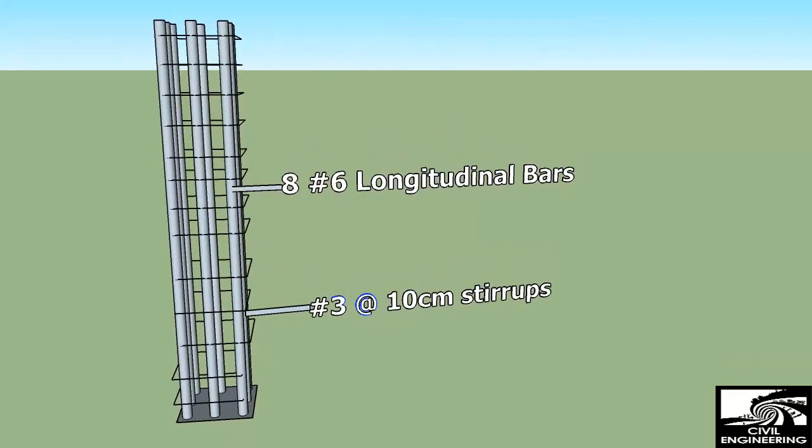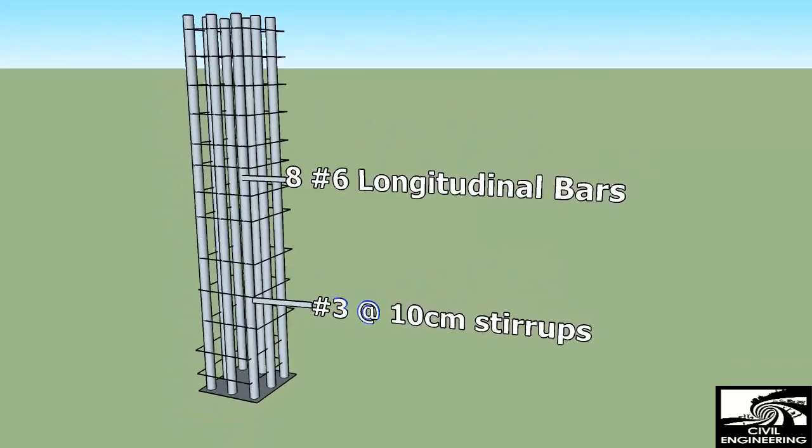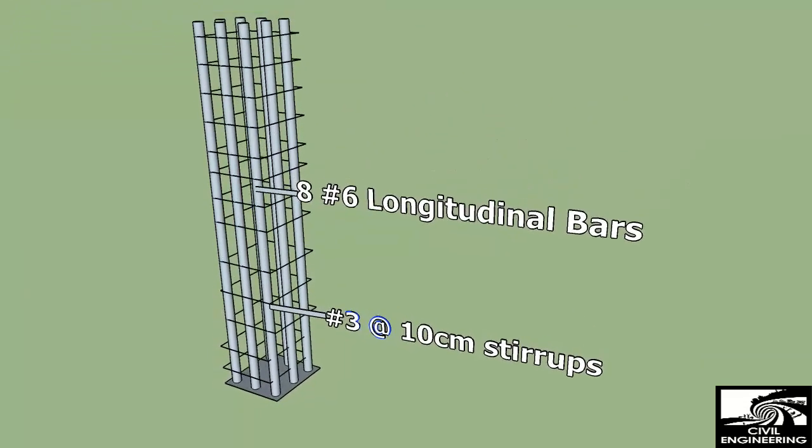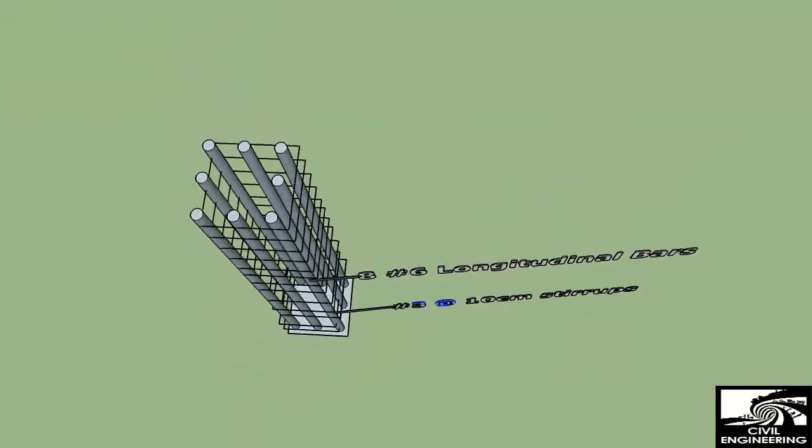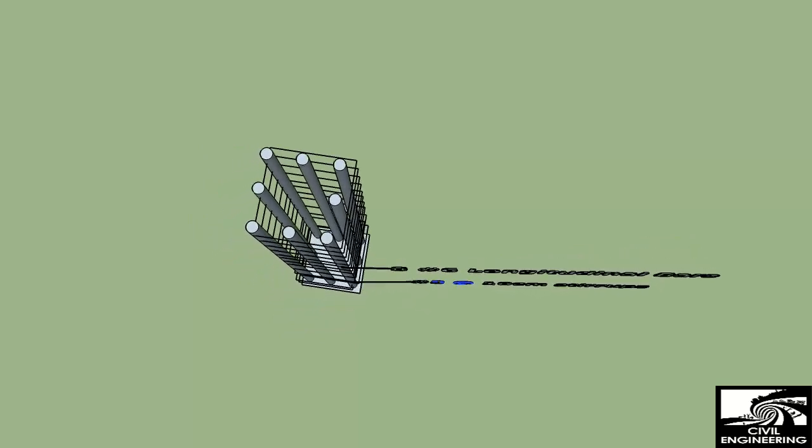In this video I will show you some basic details of the cross-section of a column. You are seeing now the longitudinal bars as well as the stirrups. This is the top view of the column.